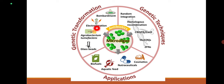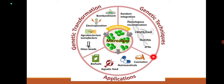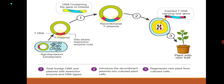Genetic transformation can be done by particle bombardment, electroporation, agrobacterium, or glass beads. The different gene editing techniques include random integration, homologous recombination, CRISPR-Cas9, TALEN (Transcription Activator-Like Effector Nucleases), and ZFN (Zinc Finger Nucleases). Further applications include biofuels, aquatic feed with enriched nutritional quality, nutraceuticals, and cosmetics — all areas where genetic engineering methodology is applicable.